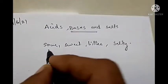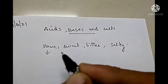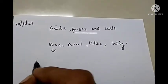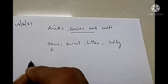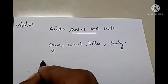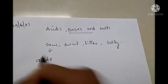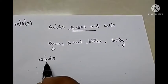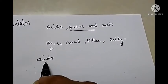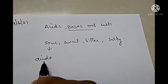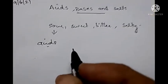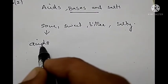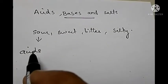Do you know what is the reason for this sour taste of food items? It is due to the presence of some other kind of substances in it. They are known as acids. So, the sour taste of food items is due to the presence of acids in it. Acids are the substances which give a sour taste to substances.